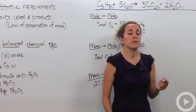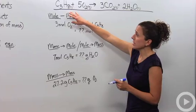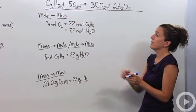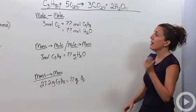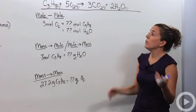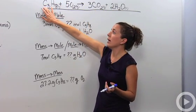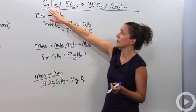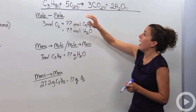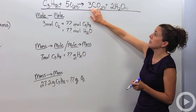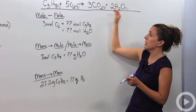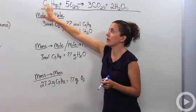Let's use this example: C3H8 plus oxygen gas yields carbon dioxide and water. This is a combustion reaction, and it's already balanced. Looking at the coefficients — one, five, three, and two — we can say if we have one mole of C3H8, we need five moles of oxygen gas to fully react. That produces three moles of carbon dioxide and two moles of water, if we started with those amounts.